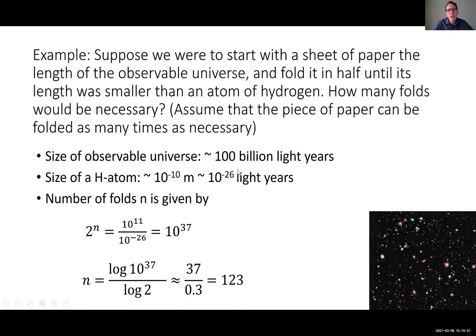Converting to the same units, you take the ratio of those two numbers to get 10³⁷. Then you need 2ⁿ to equal 10³⁷. You don't need a calculator — using logarithms, you find the answer is about 120 folds. You might find that surprisingly low, but this shows the power of exponential increase. Congratulations to everybody working on these problems, and I hope you enjoy thinking about them.